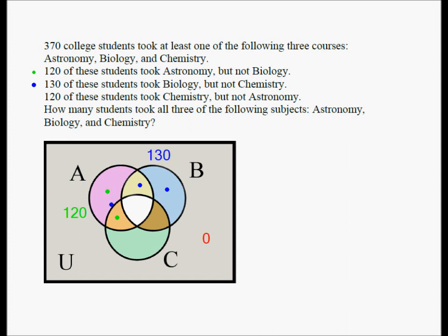The next one. These two regions, in a very similar manner, should add up to 120. We are going to give you the explanation in one second. Now, why should these two regions sum up to 120? Because 120 took chemistry but not astronomy. That means the crescent within the C circle represents the students who took chemistry but not astronomy.